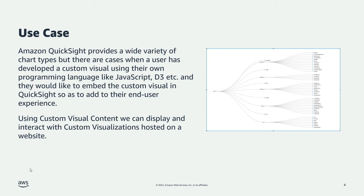You can also use navigation and parameters to control what happens within custom visuals, adding interactivity alongside other visuals in your QuickSight dashboard. The primary use case: customers wanted to embed custom-built visualizations — perhaps using JavaScript, D3, or other charting libraries — directly into their QuickSight dashboards to enhance the user experience.